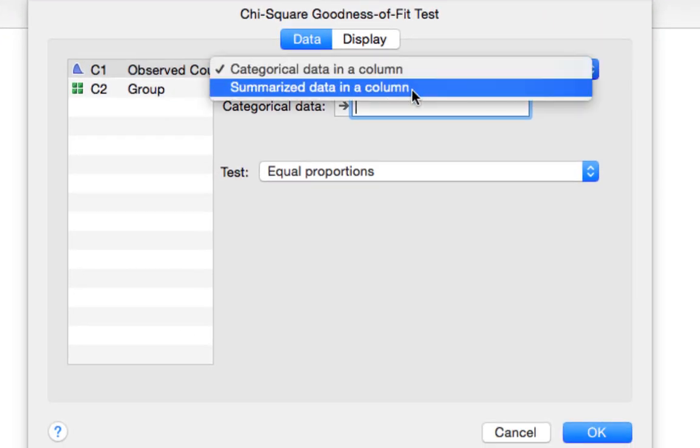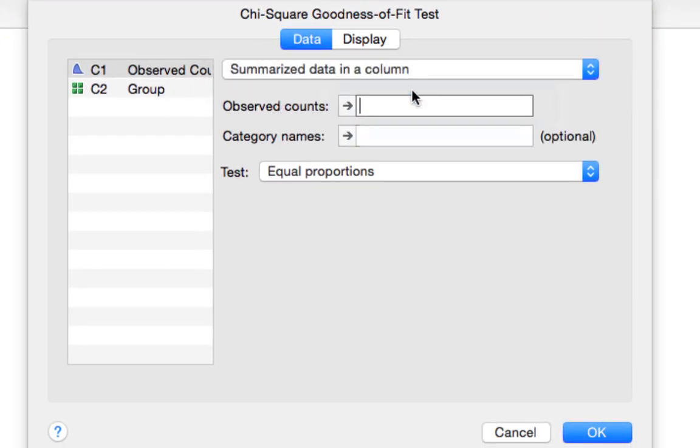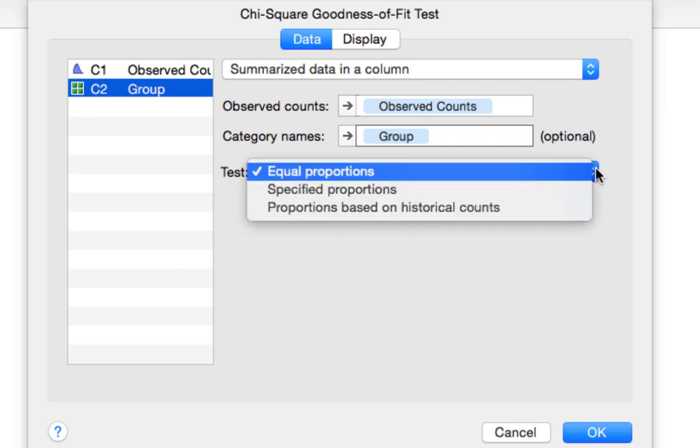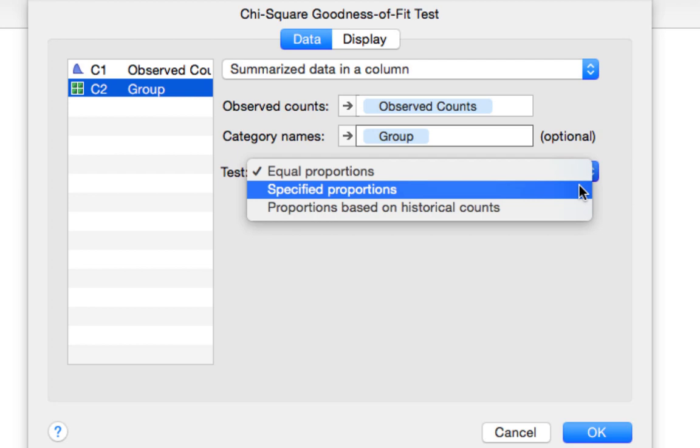We have summarized data, our observed counts are in the first column, and our category names are in the second column. The default in Minitab Express is that the proportions in the null hypothesis are equal. This is not true in this case. We have specified proportions.